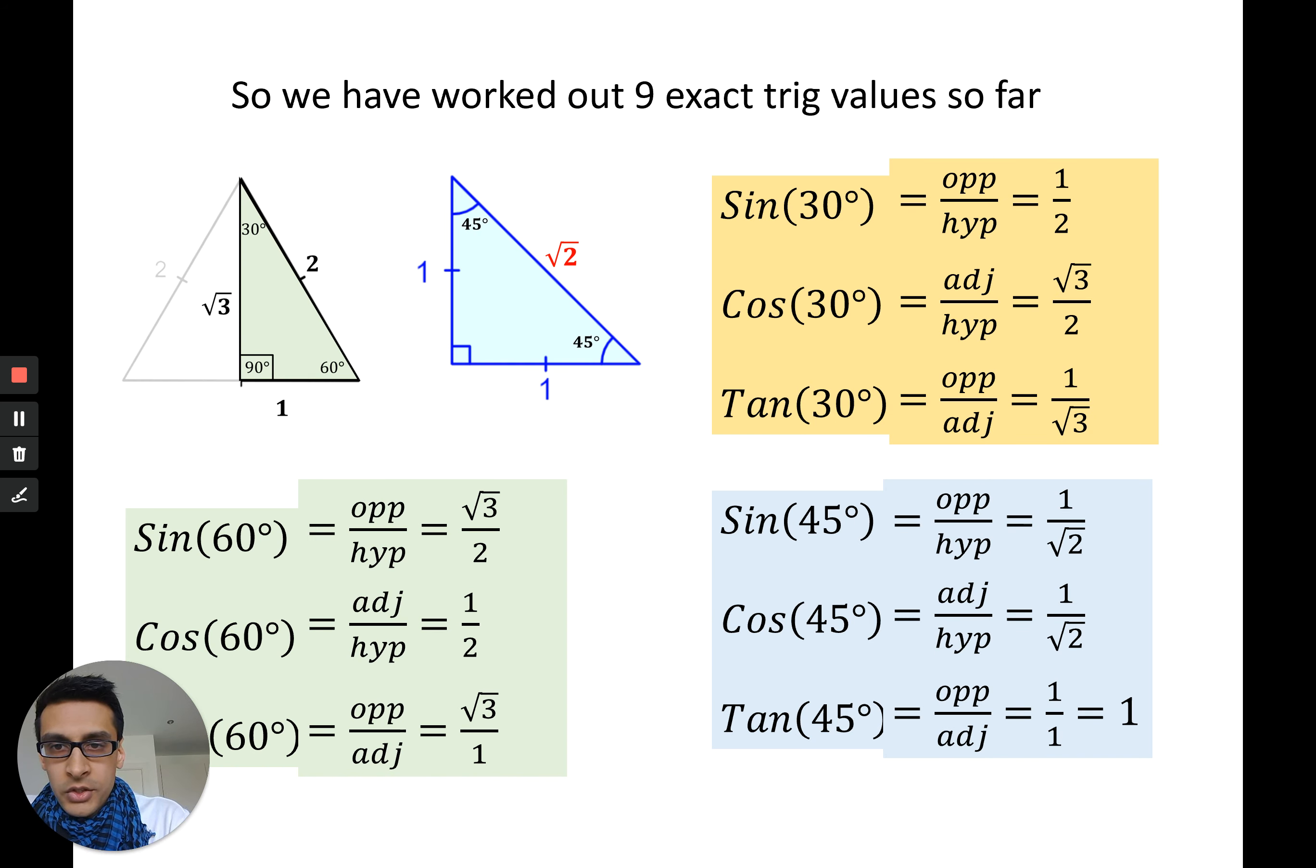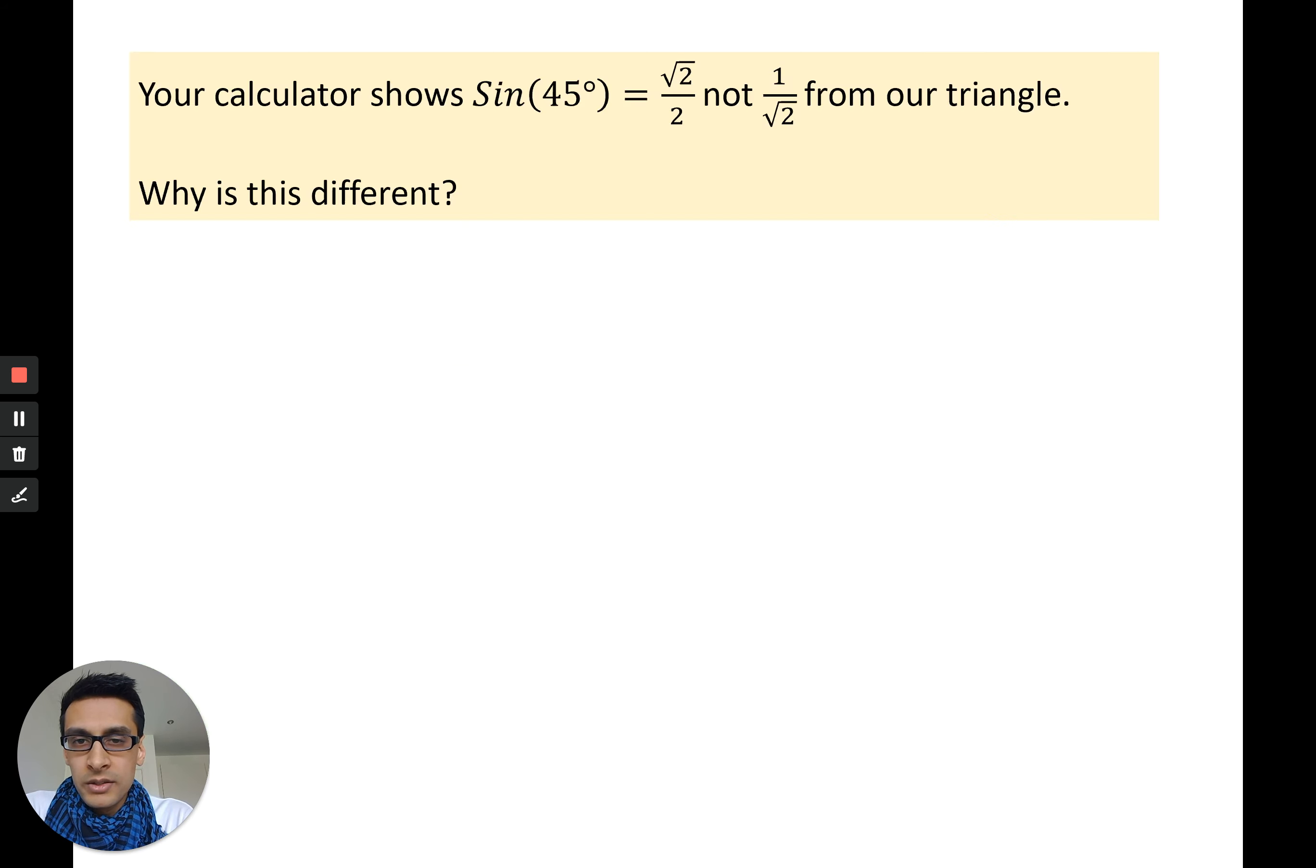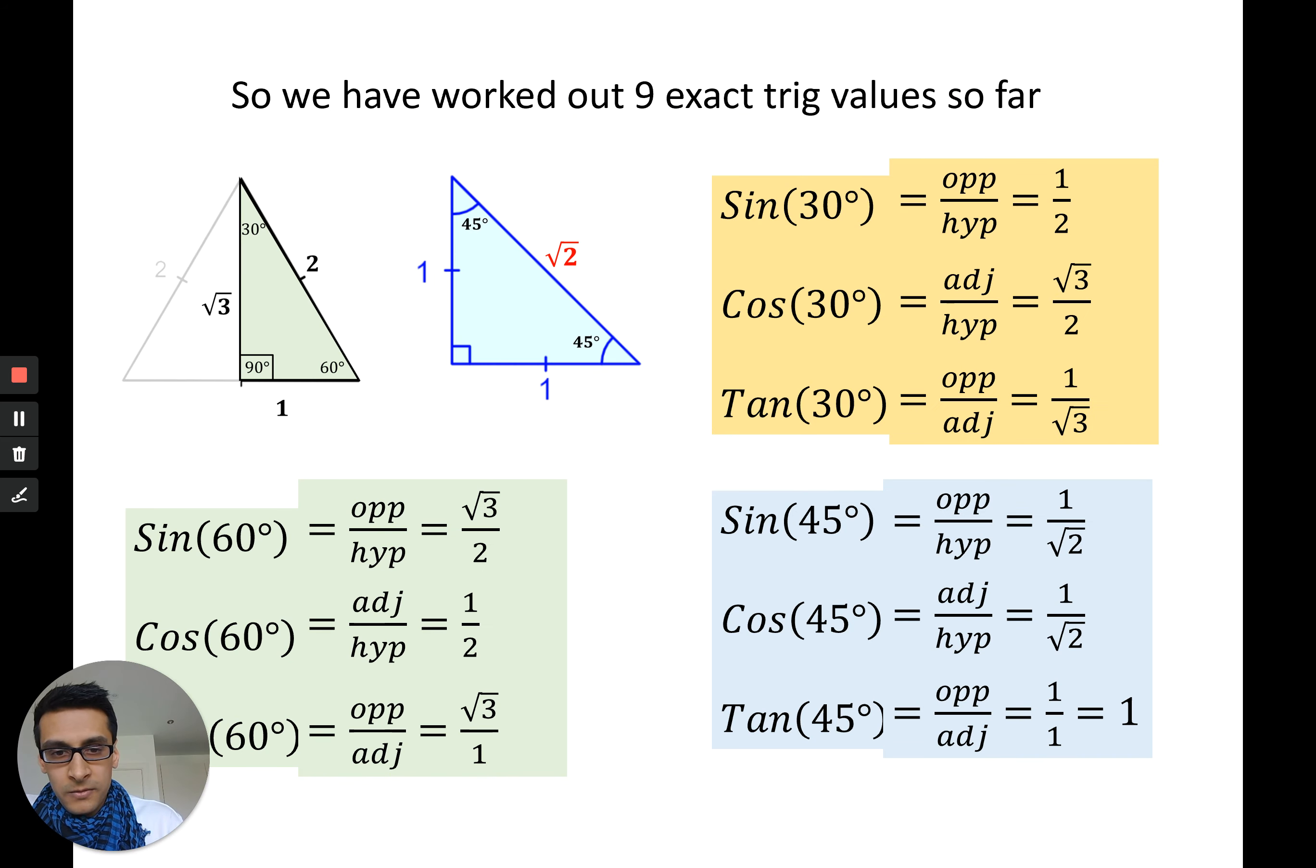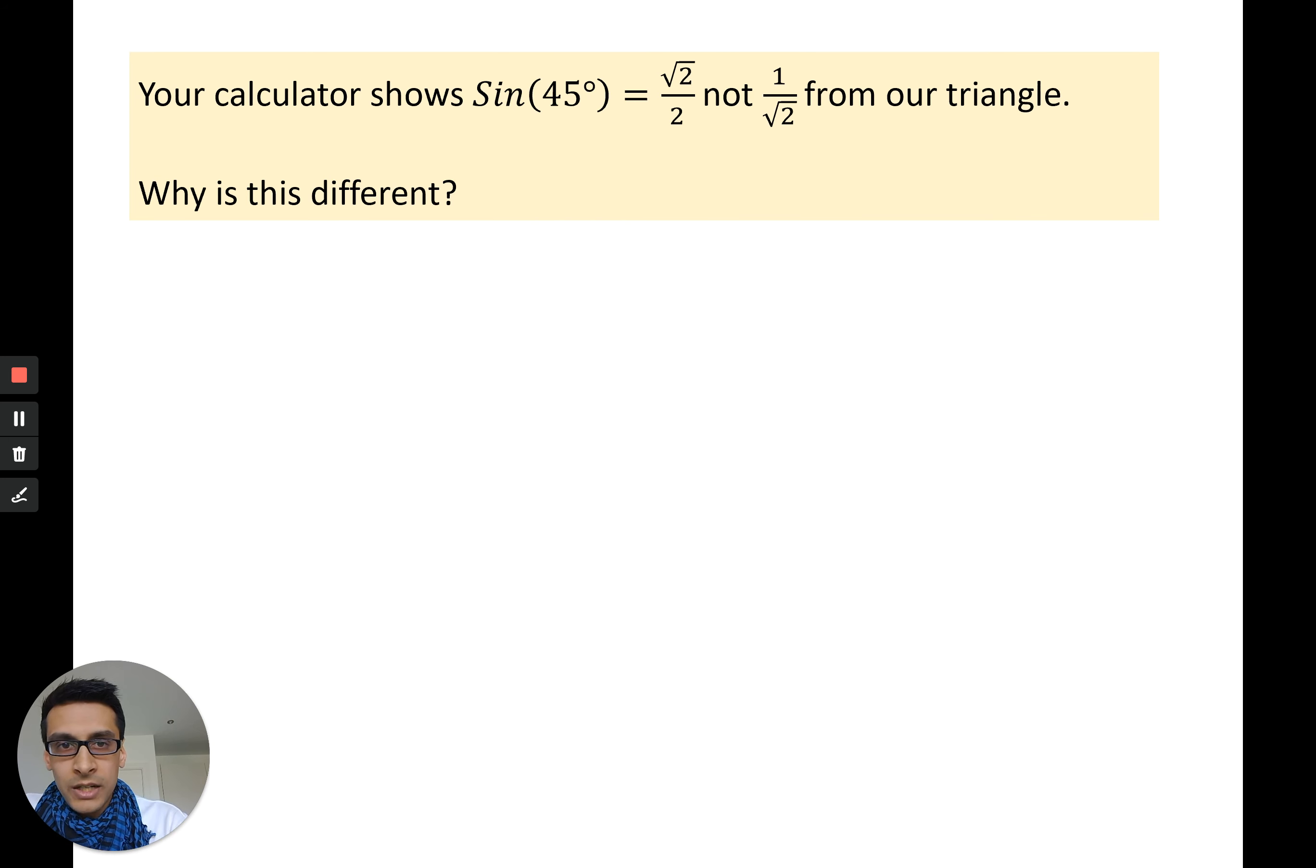Those are the two special triangles you need to know and these are the nine different exact trig values that you've worked out. They're exact because we haven't rounded them. They're exact fractions that this doesn't work for all angles, just works with these and some others that you might not need to know, but these are the main ones. Your calculator, when you put sine 45 in your calculator, looking back at this, I get one over root 2 from this triangle. However, your calculator will show you root 2 over 2.